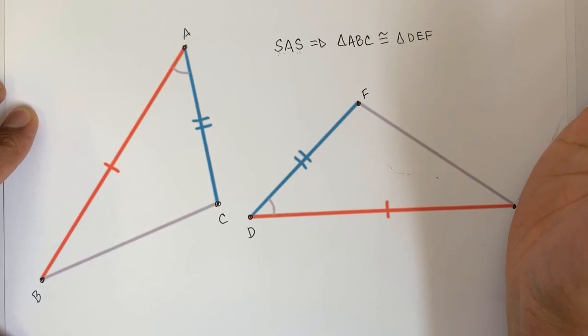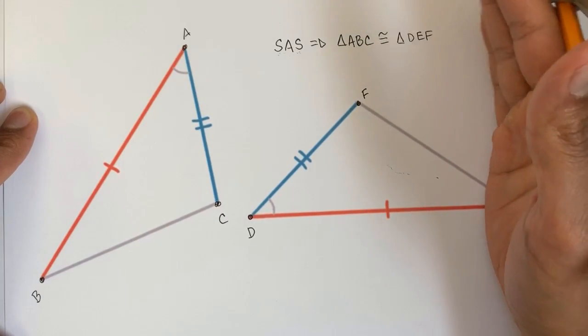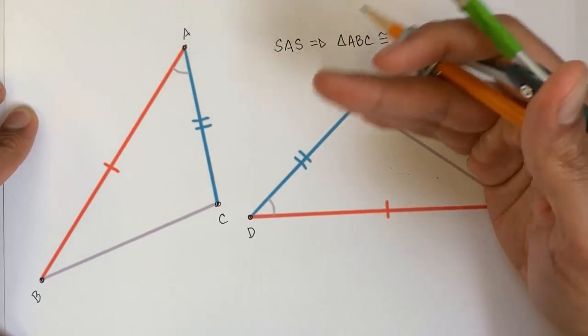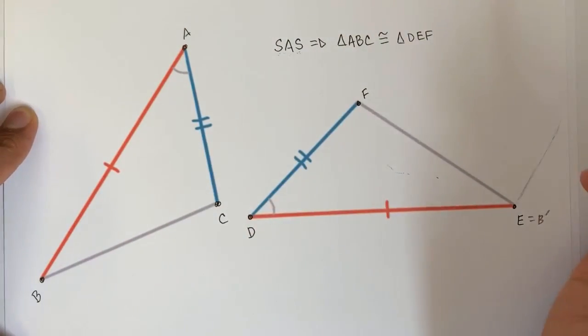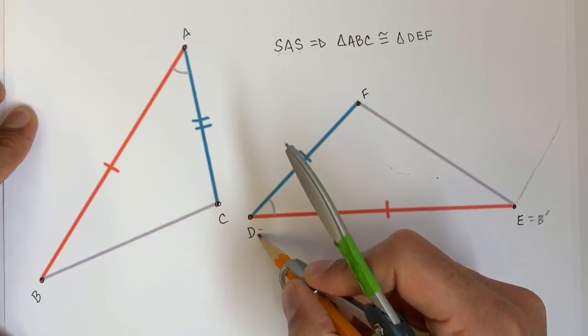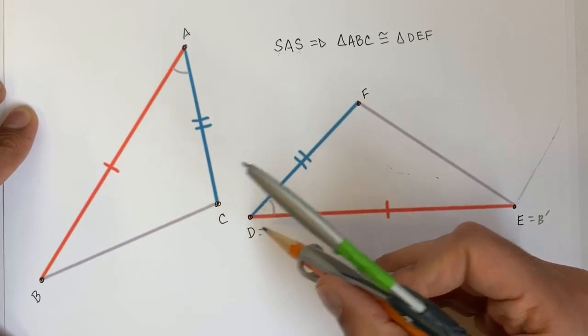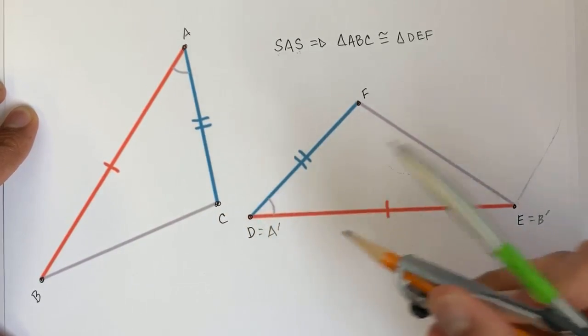But then we could do another rigid transformation that rotates about point E, or B prime, that rotates that orange side and the whole triangle with it, onto DE. In which case, once we do that second rigid transformation, point A will now coincide with D, or we could say A prime is equal to D.